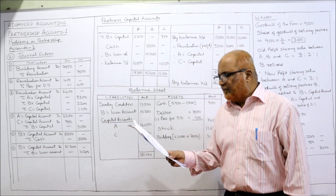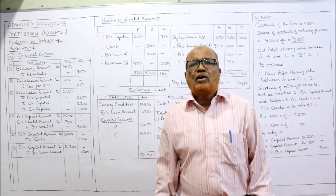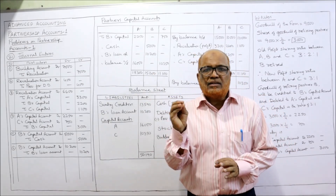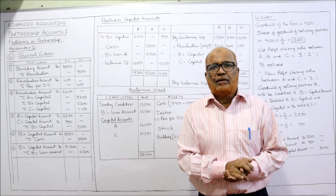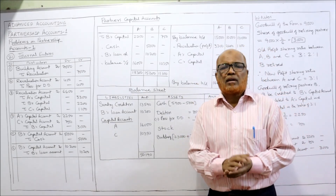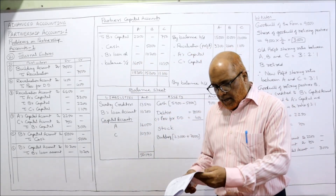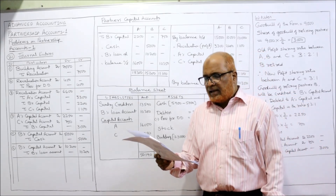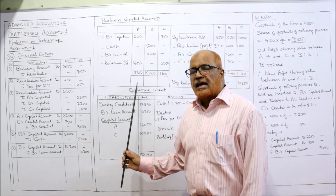Rupees 5,000 will be paid to B immediately, and the balance due to him will be treated as a loan carrying interest at 6% per annum. We have to find the total amount due to the retiring partner B. Of that total, 5,000 rupees are paid immediately and the remaining balance will be treated as a loan from B, carrying interest at 6% per annum in future. We will prepare the journal entries, partners' capital account, and balance sheet.